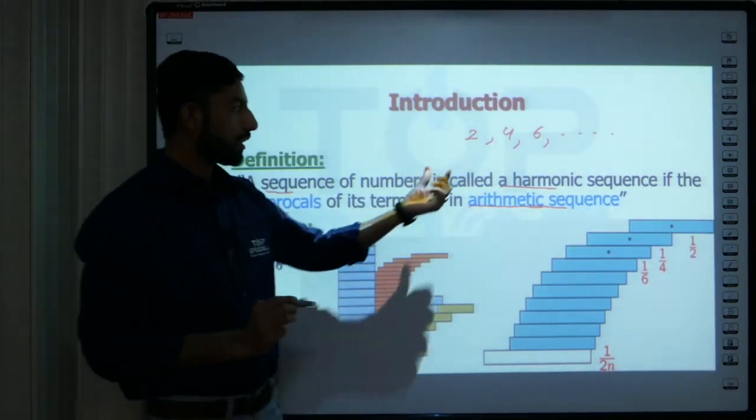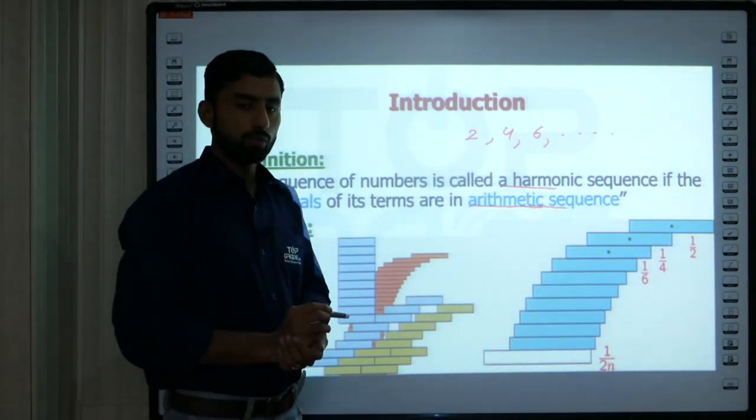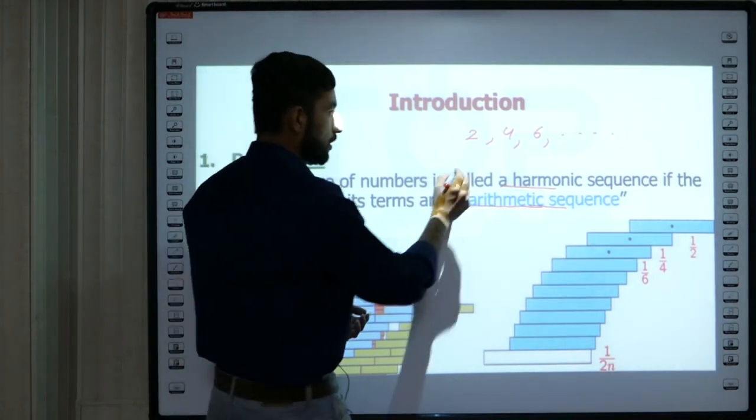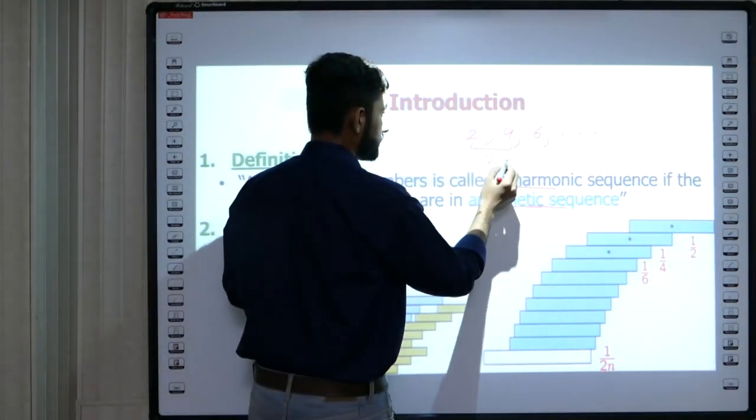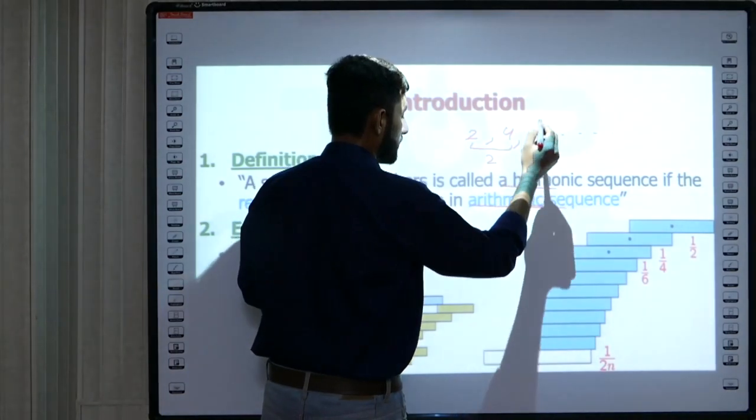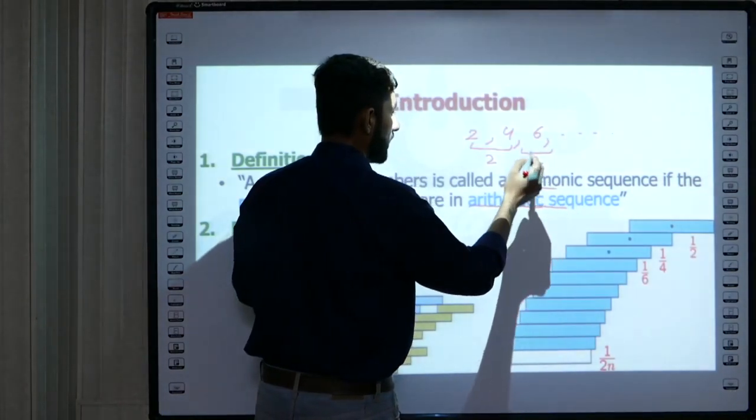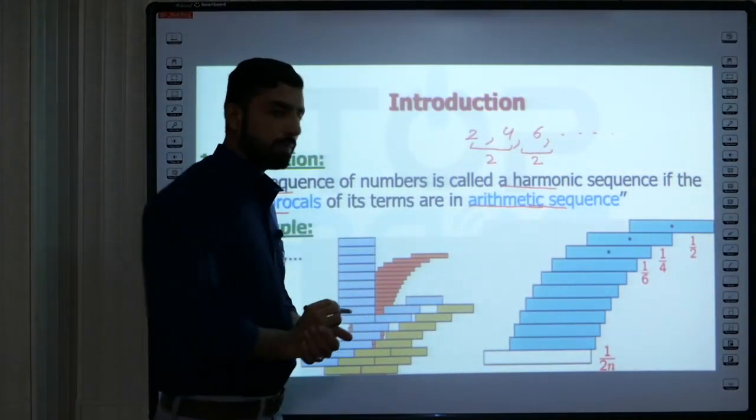If I take the common difference of any two consecutive terms, it will always be the same. Like if I take the common difference of 2 and 4, it will be 2. Similarly, if I take the common difference of 4 and 6, that is also 2, and so on for any consecutive terms.